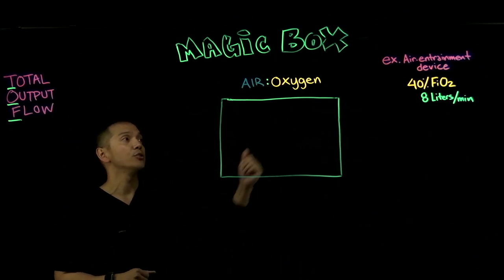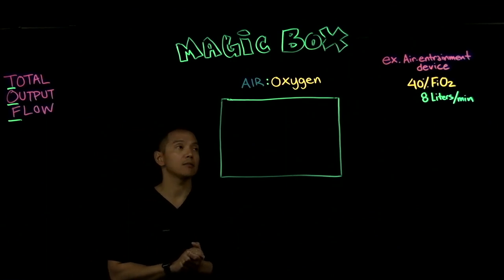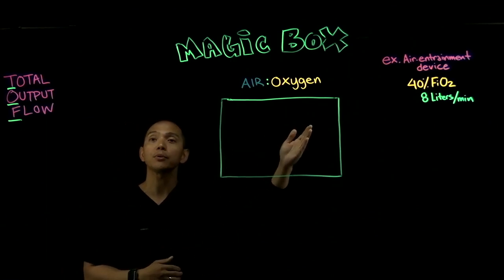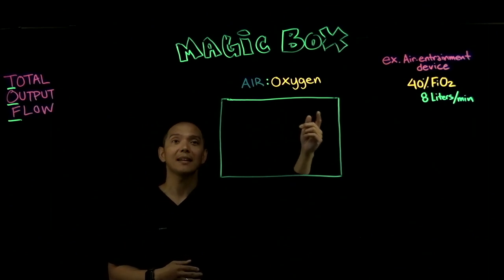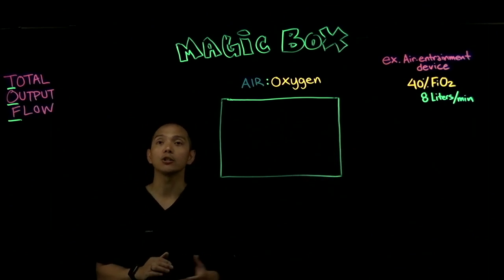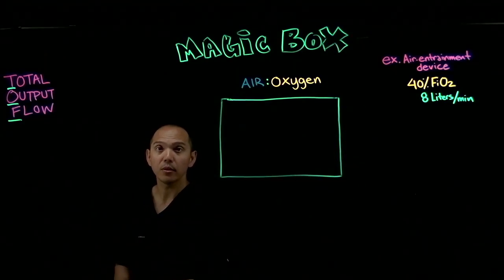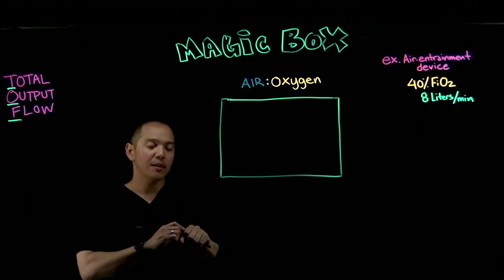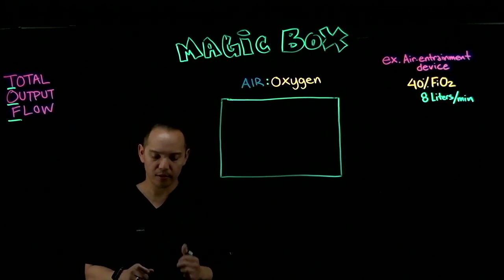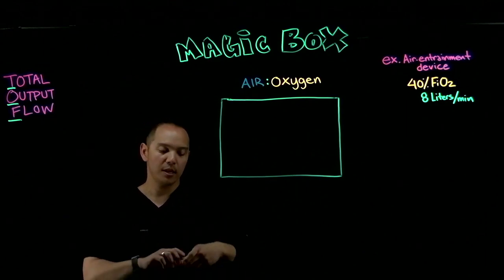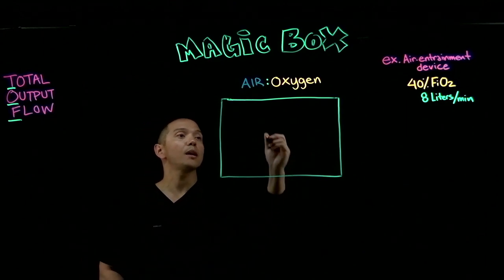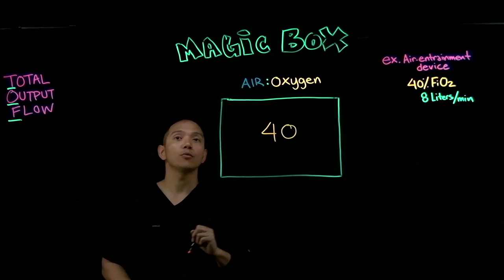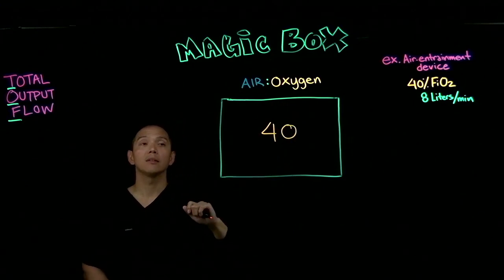In this example, the air entrainment device is set at 40% FiO2 and 8 liters per minute. We're going to take that FiO2 value and write it right in the middle of the box — so we write 40 in the center.